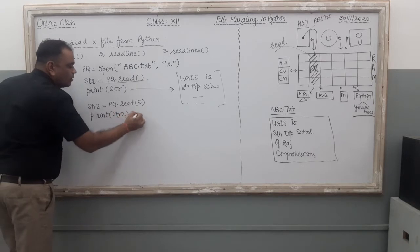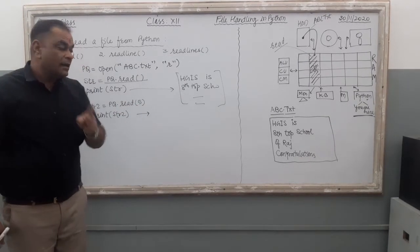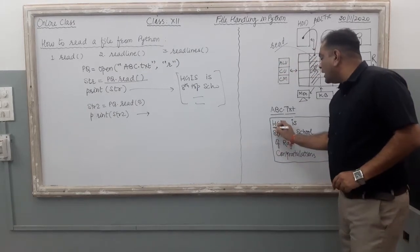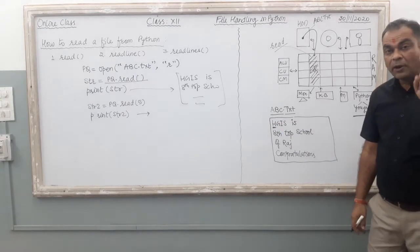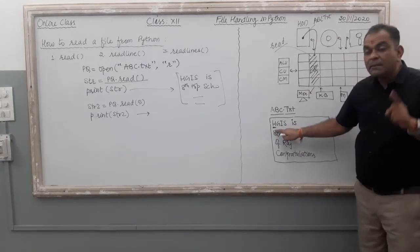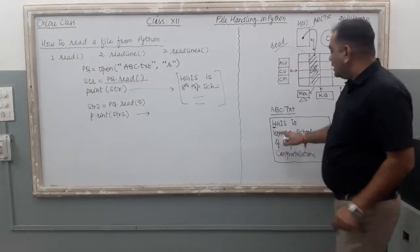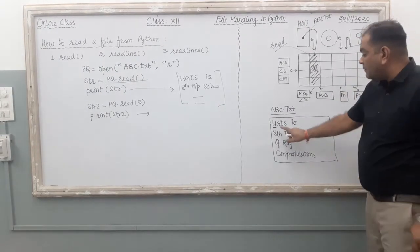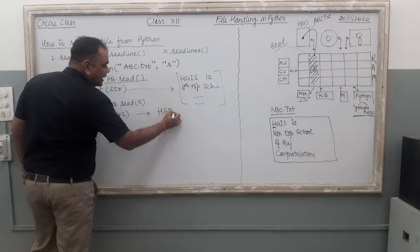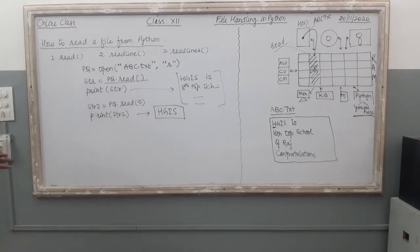With `print(str2)`, the output shows the first five letters from the current cursor position. When you open the file, the file pointer is at the beginning (position zero). So `pq.read(5)` reads five characters: H, G, I, S, and one space — that is the output. The read command is related to the file pointer position.